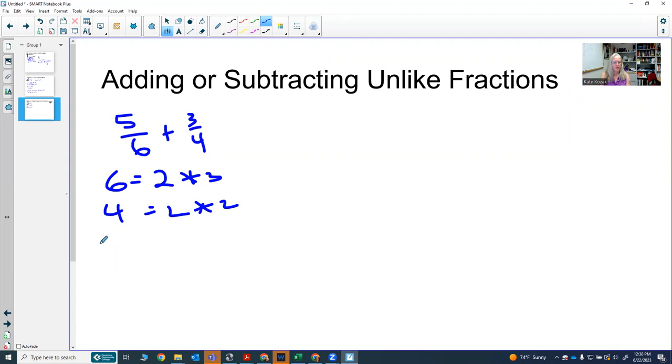So the lowest common denominator, or LCD as a quick way to say, is going to have 2 times 3 times 2, which is 12.